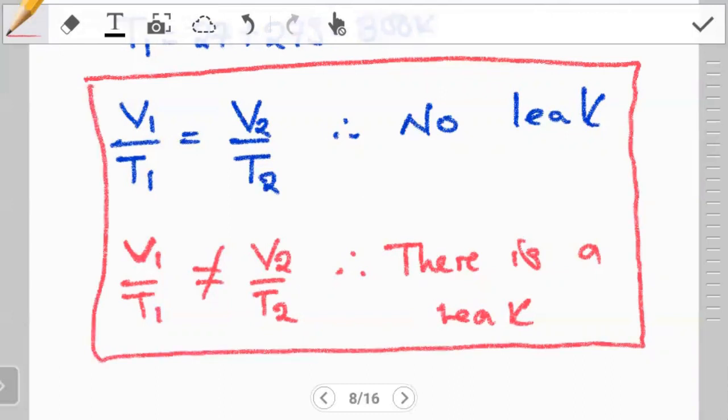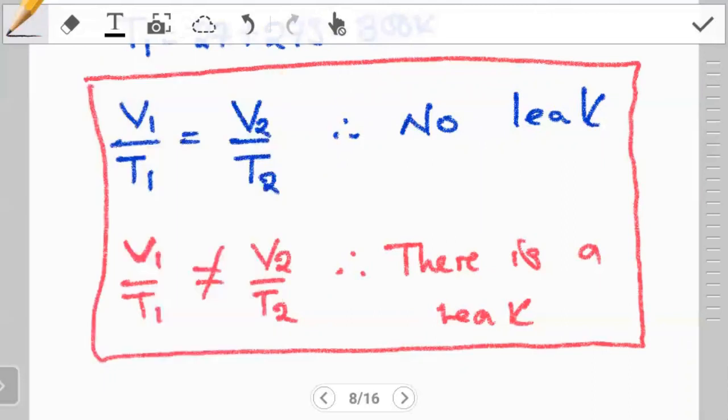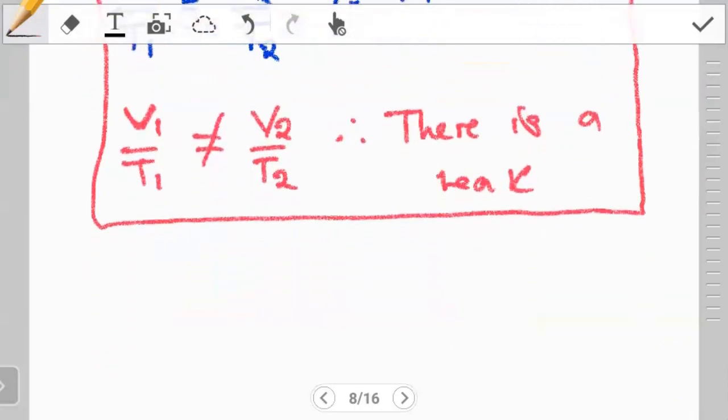In other words, what we're saying is if V1 over T1 is going to be equal to V2 over T2 as predicted by Charles's Law, then the conclusion is no leak. But if we observe that V1 divided by T1 is not equal to V2 over T2, then the conclusion is going to be there is a leak in the system. So this is basically what we are going to work with. The first step is we have to find the ratios.